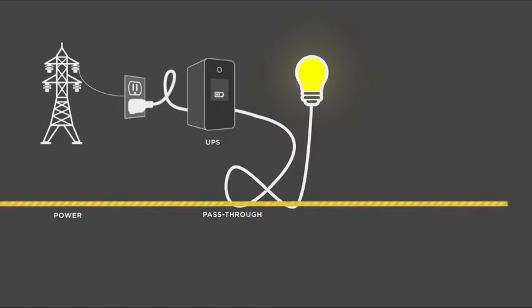During normal operation, a UPS also protects equipment against sudden power surges or spikes. When utility power fails or is switched off, the UPS switches to battery power instantly. The equipment keeps working.